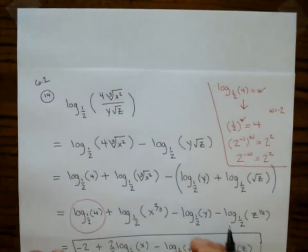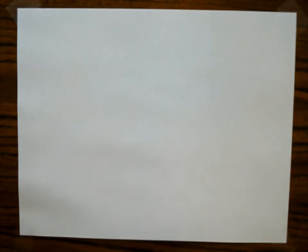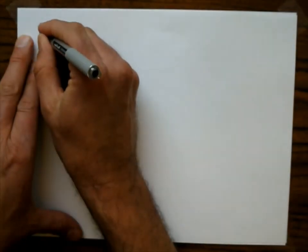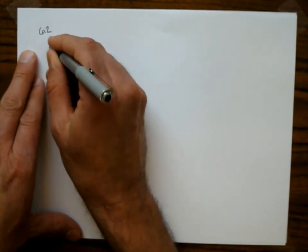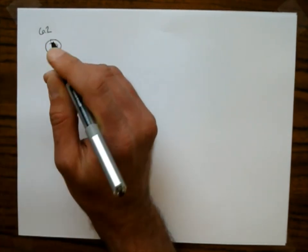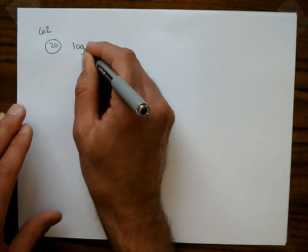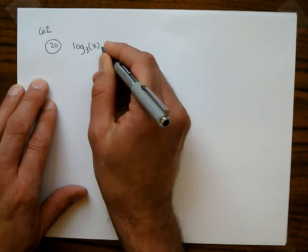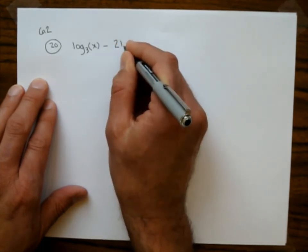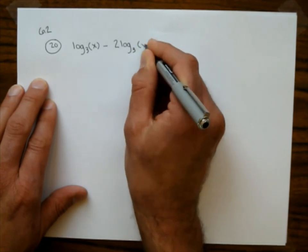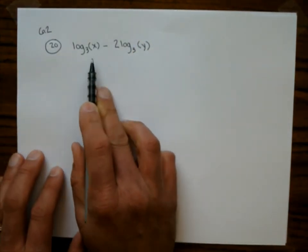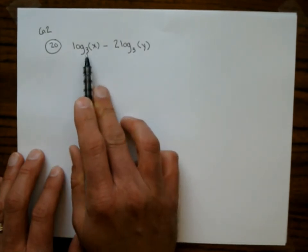Let's do a few more problems in 6.2. Our next problem is number 18: use the properties of logarithms to express as a single logarithm. The problem is log base 3 of x minus 2 times log base 3 of y. We want to combine those into one log, and we can because both have base 3.